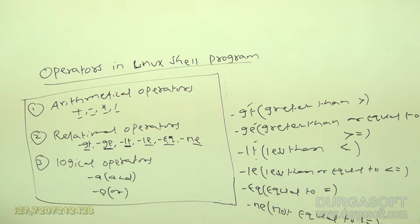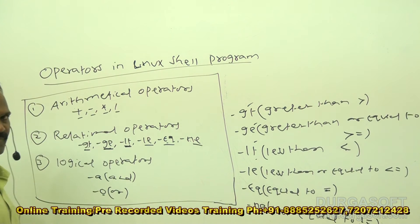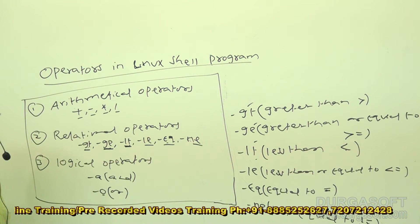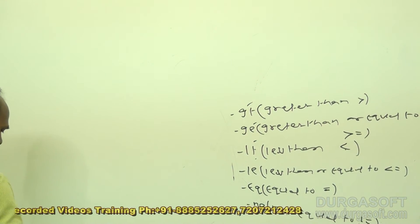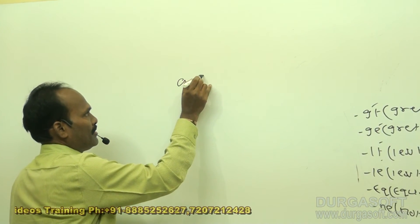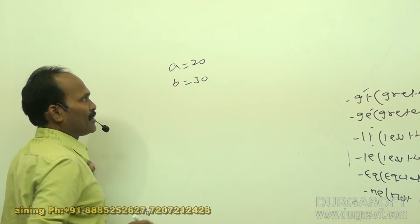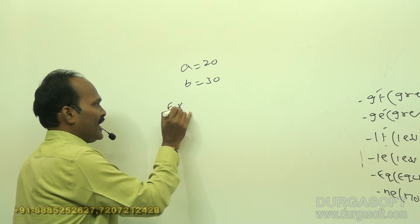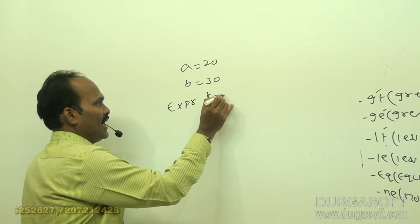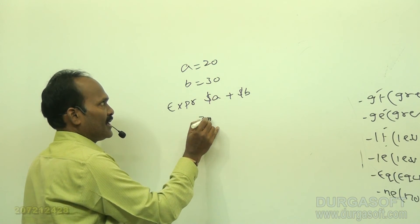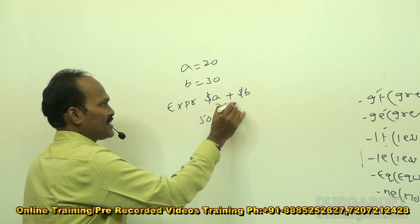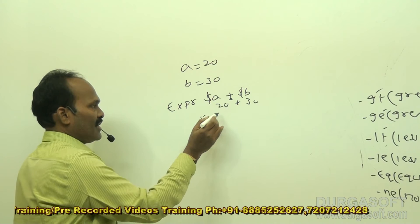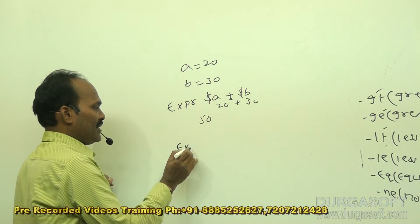One more command we need to know is the `expr` expression command, which is used especially for doing mathematical calculations like addition, subtraction, multiplication, and division. For example, if a=20 and b=30, then `expr $a + $b` will display 50, because 20 plus 30 equals 50.